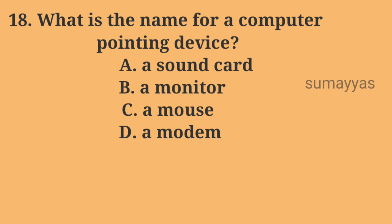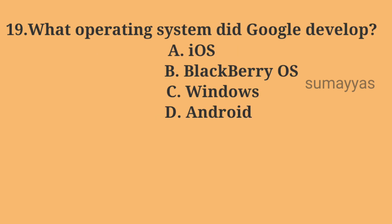Next question: what is the name for a computer pointing device? Option A: A sound card. Option B: A monitor. Option C: A mouse. Option D: A modem. The correct answer is Option C: A mouse.